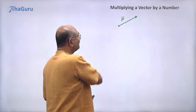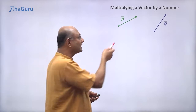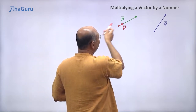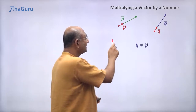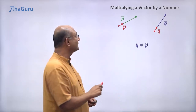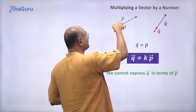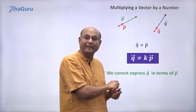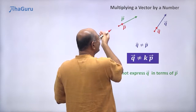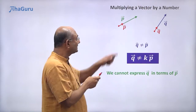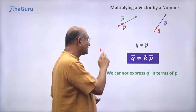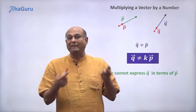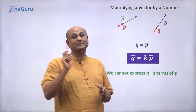Let us now look at p vector and turn it around. If I turn it around, p vector and q vector don't have the same direction — they have the same magnitude, but this is p vector's direction and that is q vector's direction. The directions are not the same. So can you write q vector as something times p vector? No. If we multiply p vector by k, you will get something in the direction of p vector, whereas q vector is not in the direction of p vector. To write q vector as k times p vector, we need them to have the same direction.